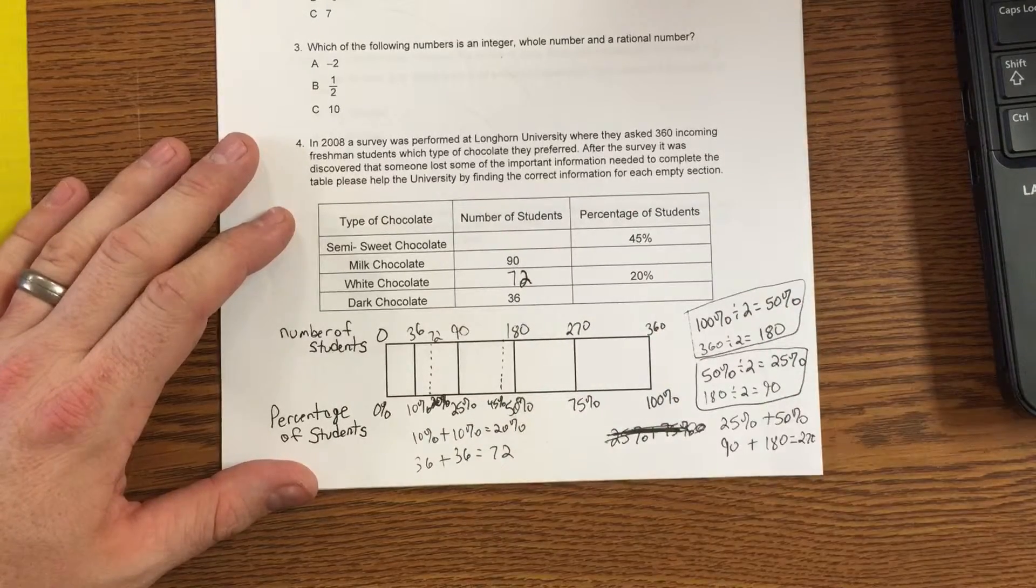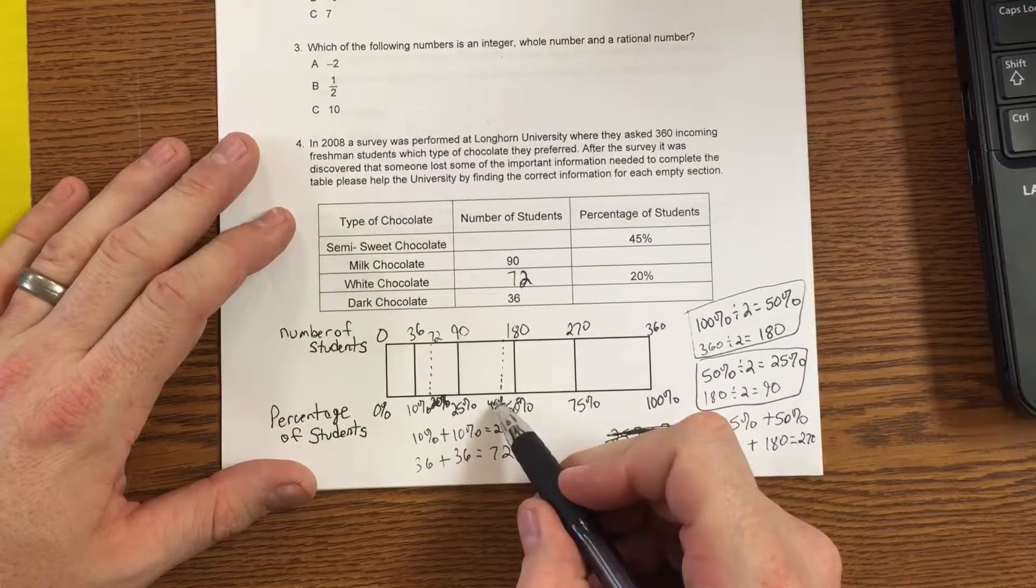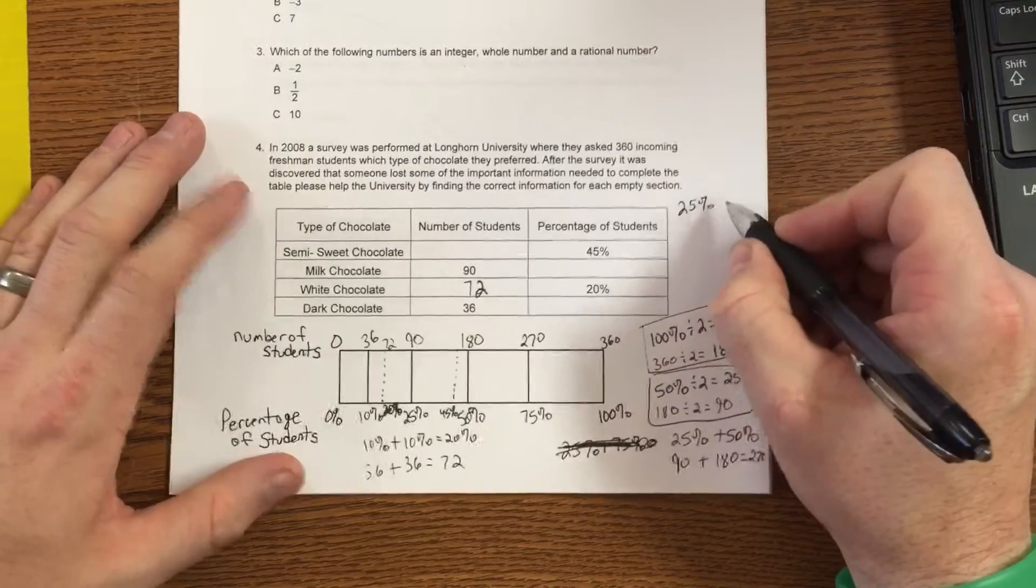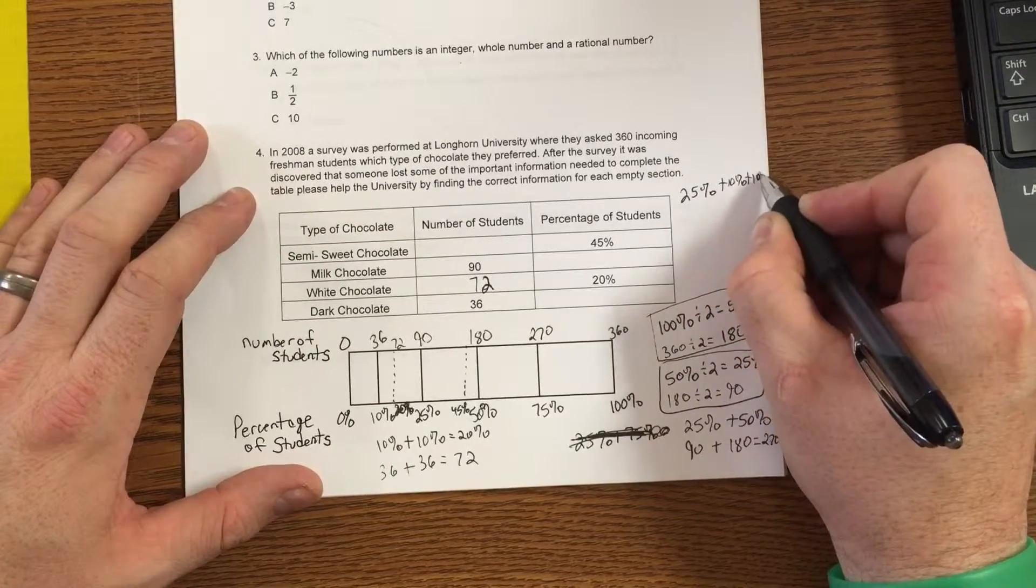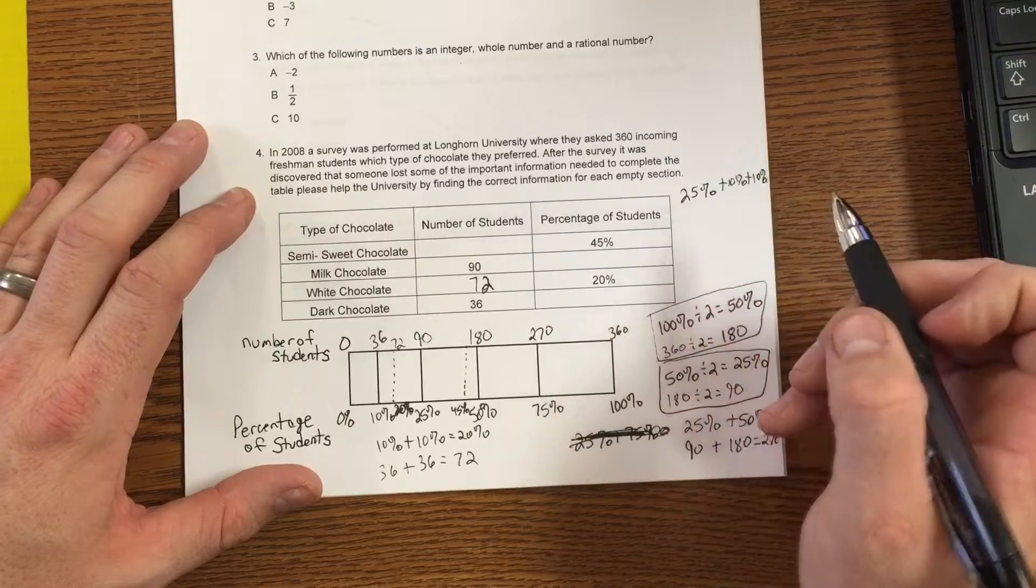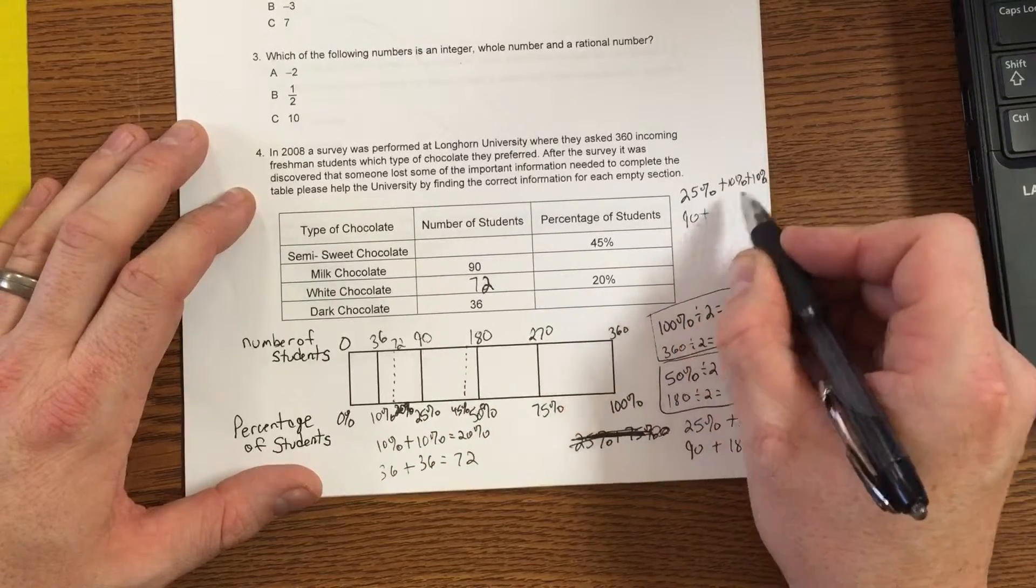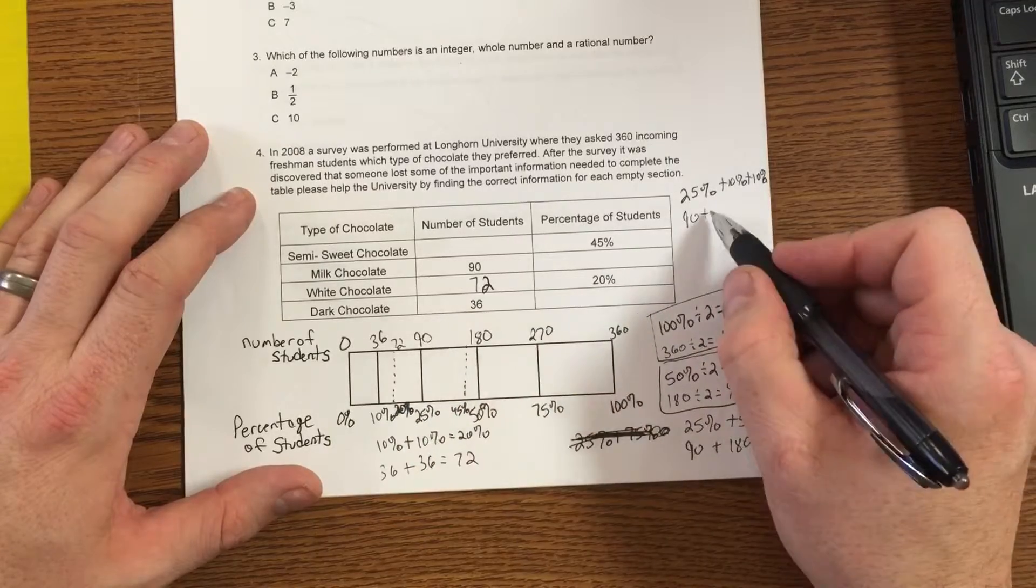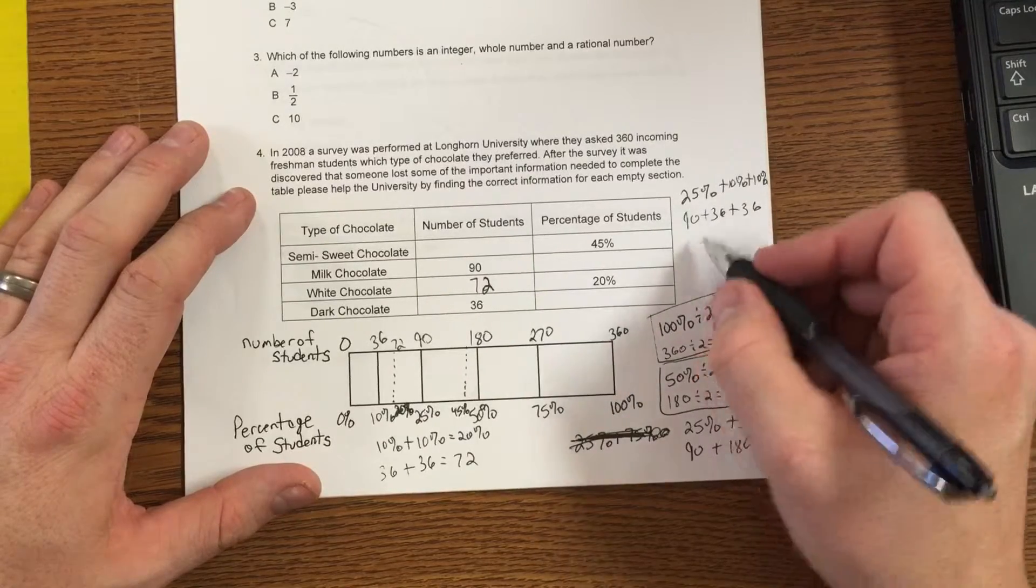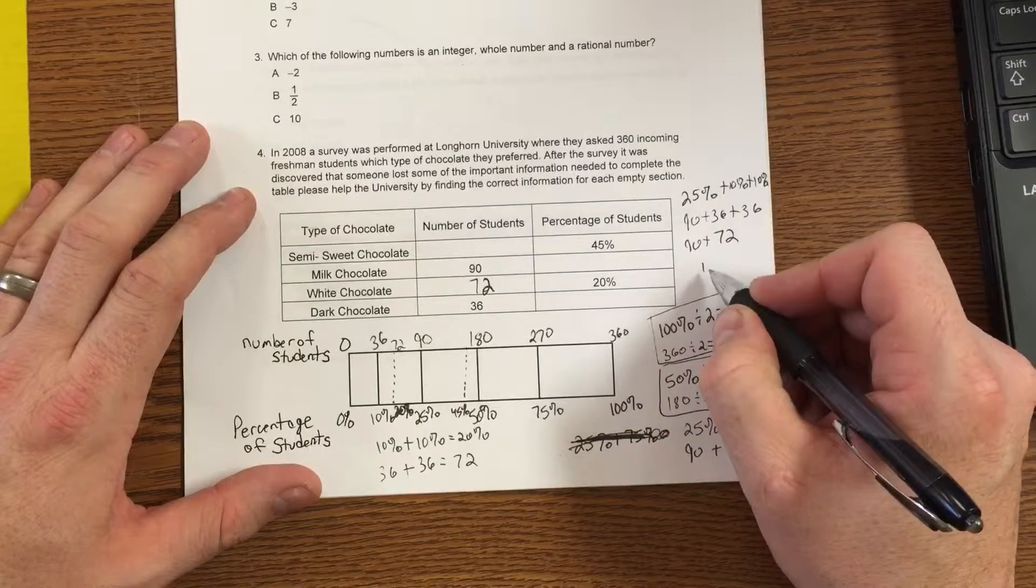Okay. 45%. Now what can I do to find 45%? For myself, I like to do this right here. To find 45%, I'm going to take 25% and add 10% two times. 25, 35, 45. So what's 25% worth? 25% is worth 90. What's 10% worth? 36. 36 again. Well, 36 and 36, we just figured that out. That's 72. 90 plus 72 is 162.